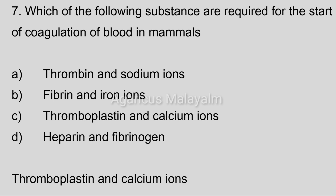Correct answer: Option C, thromboplastin and calcium ions. The 12 blood clotting factors include: fibrinogen, prothrombin, thromboplastin, calcium, labile factor, stable factor, anti-hemophilic factor, Christmas factor, Stuart-Power factor, plasma thromboplastin antecedent, Hageman factor, and fibrin stabilizing factor.